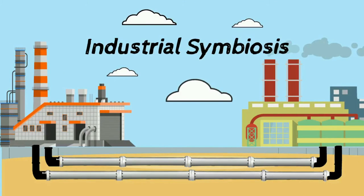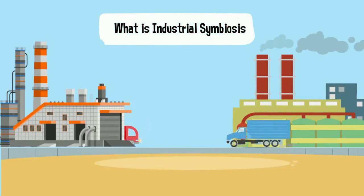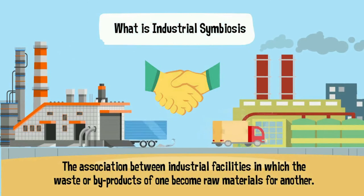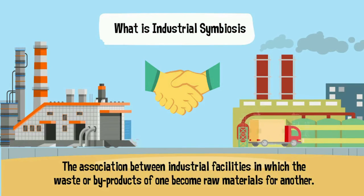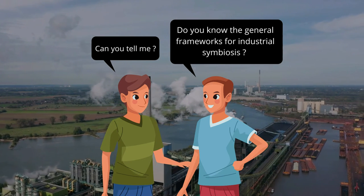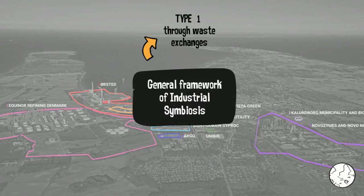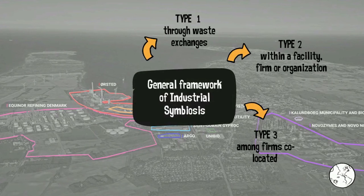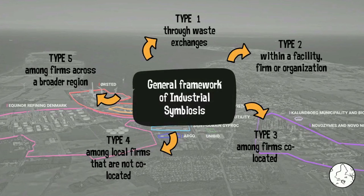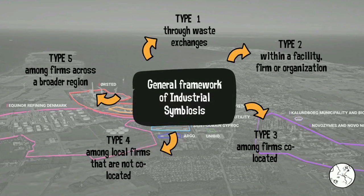Let's talk about industrial symbiosis. Industrial symbiosis is about the association between industrial facilities in which the waste or by-product of one becomes raw material for another. There are 5 general frameworks: Type 1 — waste exchange through third-party dealers; Type 2 — exchange within a facility; Type 3 — exchange among co-located organizations in an industrial park; Type 4 — exchange among local firms that are not co-located; Type 5 — exchange across a broader region based on virtual linkages rather than co-location.